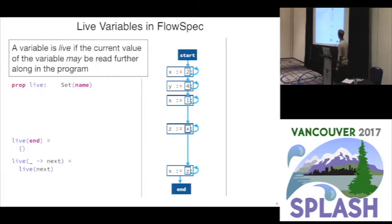So at the end of the program no variables should be live, and here's the general propagation rule. We match on anything and the next control flow graph node, and we say that for that anything the live variables should be the live variables of the next node. If we have just these two rules then we get the empty set everywhere.